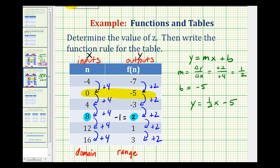And now to write this as a function rule, we'll replace y with f of n and x with n. So we'll have f of n equals one-half n minus five. This would be the function rule for the given table.